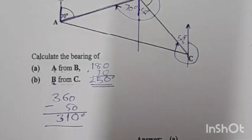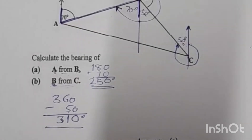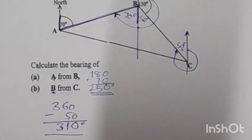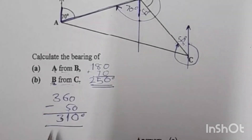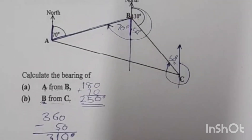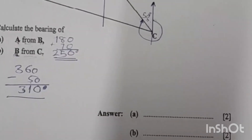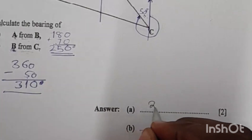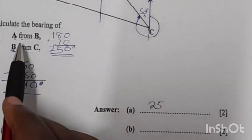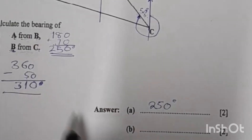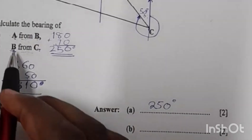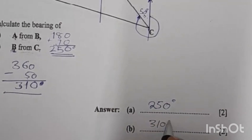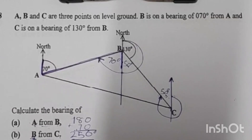So the bearing of B from C is 310 degrees. To summarise our answers: the bearing of A from B is 250 degrees, and the bearing of B from C is 310 degrees. If you found this video useful, I encourage you to subscribe to my YouTube channel.